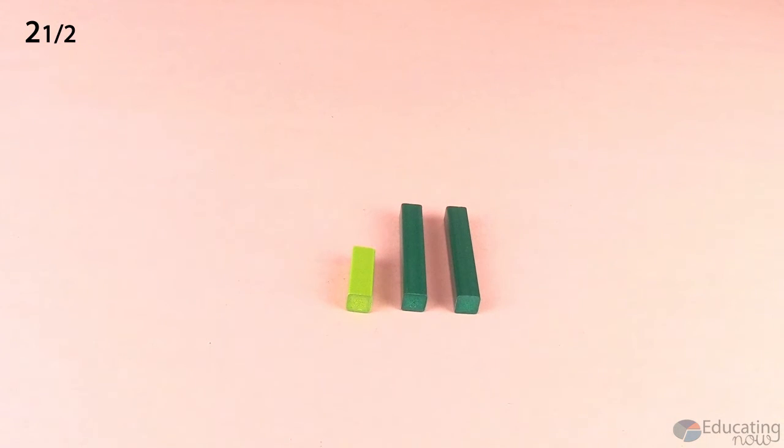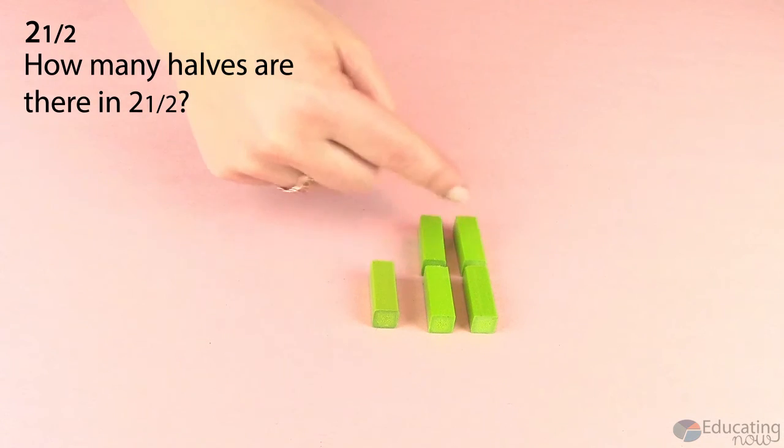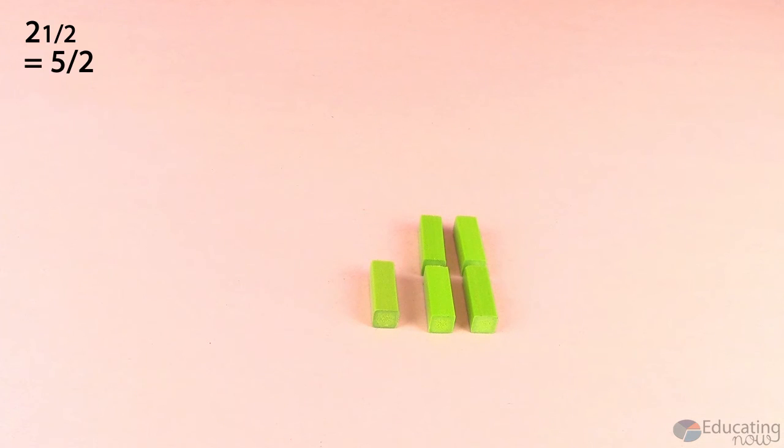And next, I want to know how many halves are there in two and a half. So if I'm going to trade in my wholes for halves, how many will it take to make two and a half? So here I have my two and a half, and we can see that that is equal to five halves.